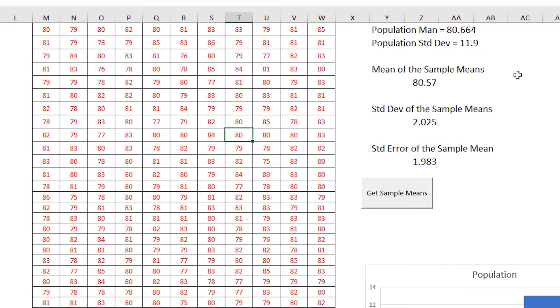That also means standard error of the sample means goes down. This is 11.9 divided by 6. Why 6? Our sample size was 36. The square root of 36 is 6. So 11.9 over 6 is what we're going to get here.